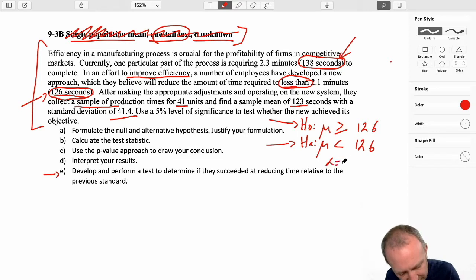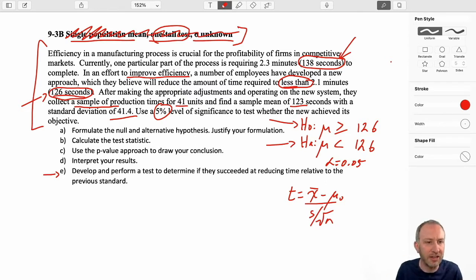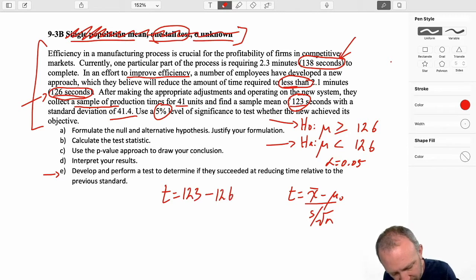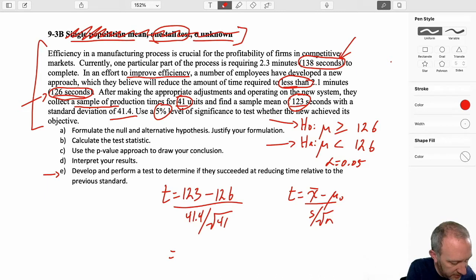This is our first test. Did they succeed at reducing the amount of time to something less than 126 seconds? My alternative says yes they did succeed. My null says no they did not succeed. Next step, here I have my level of significance is given to us. Now we want to calculate that test statistic. So here my sample is 123 minus 126. I have my standard deviation as 41.4 over the square root of 41. So my t is 41.4 over root 41, and I have a t statistic of 0.464.